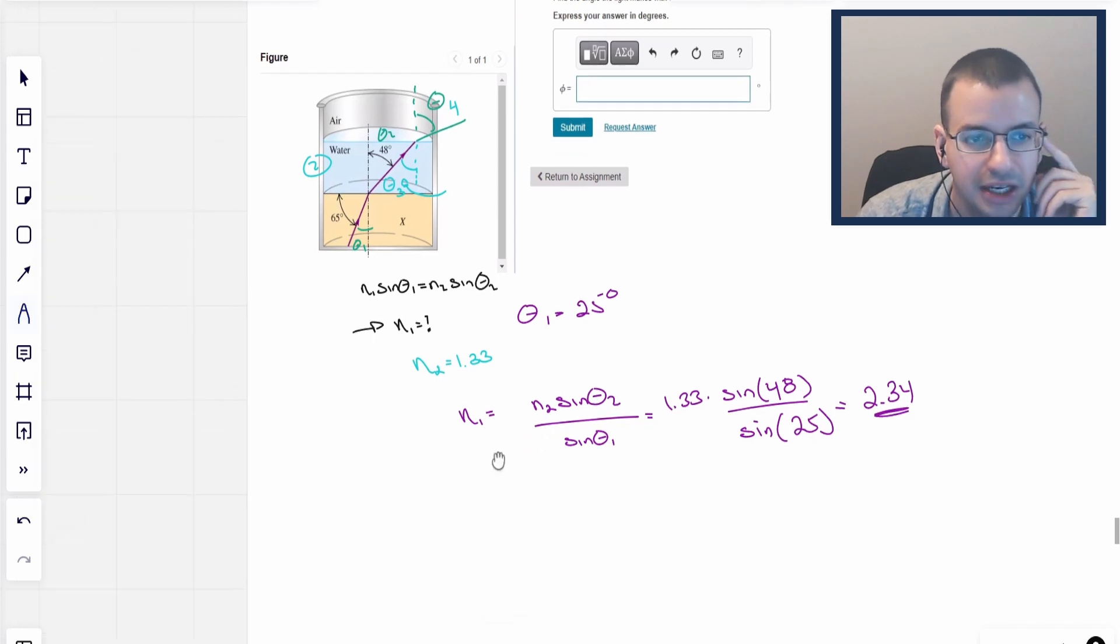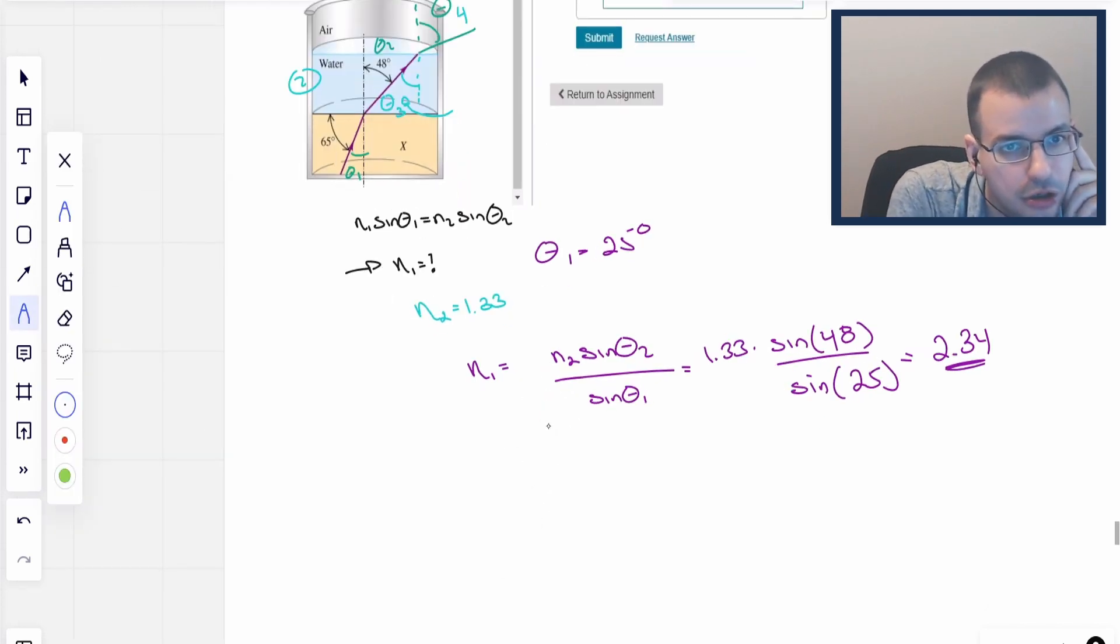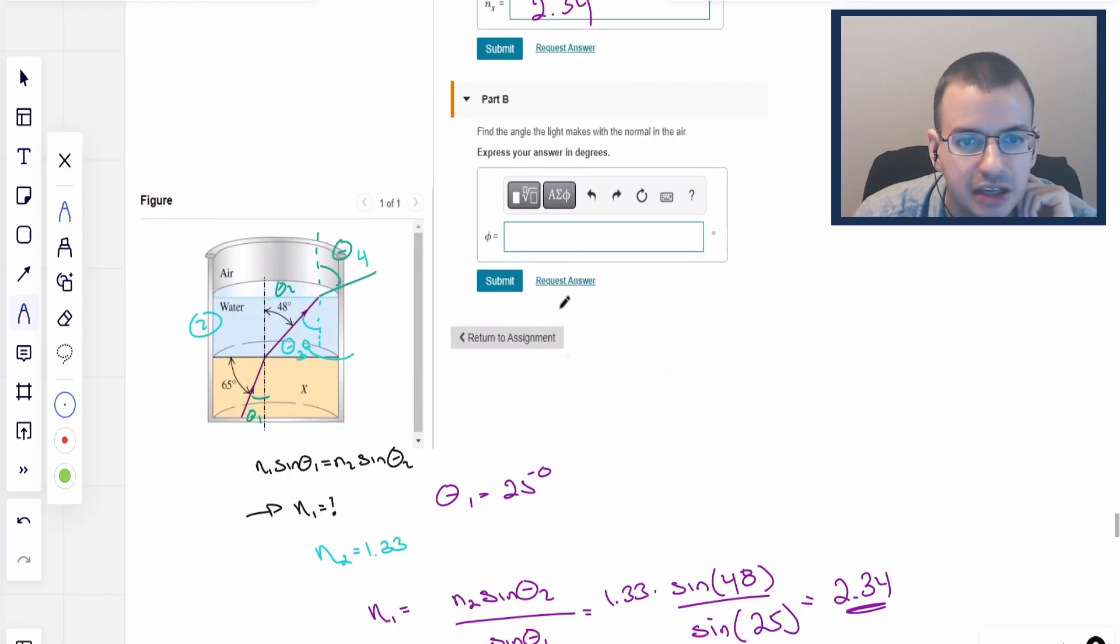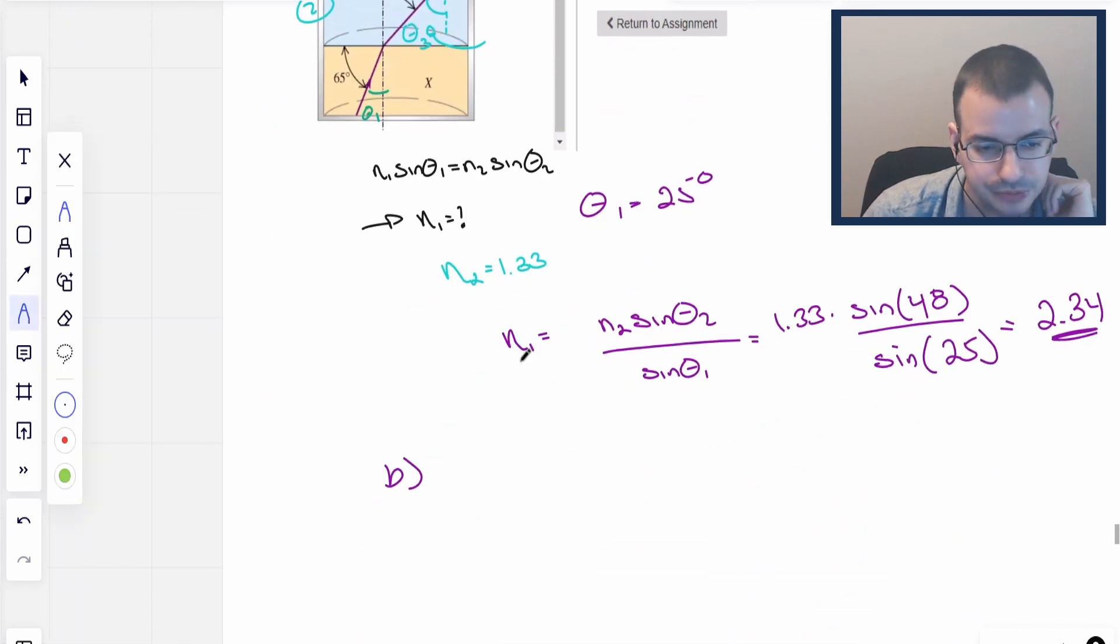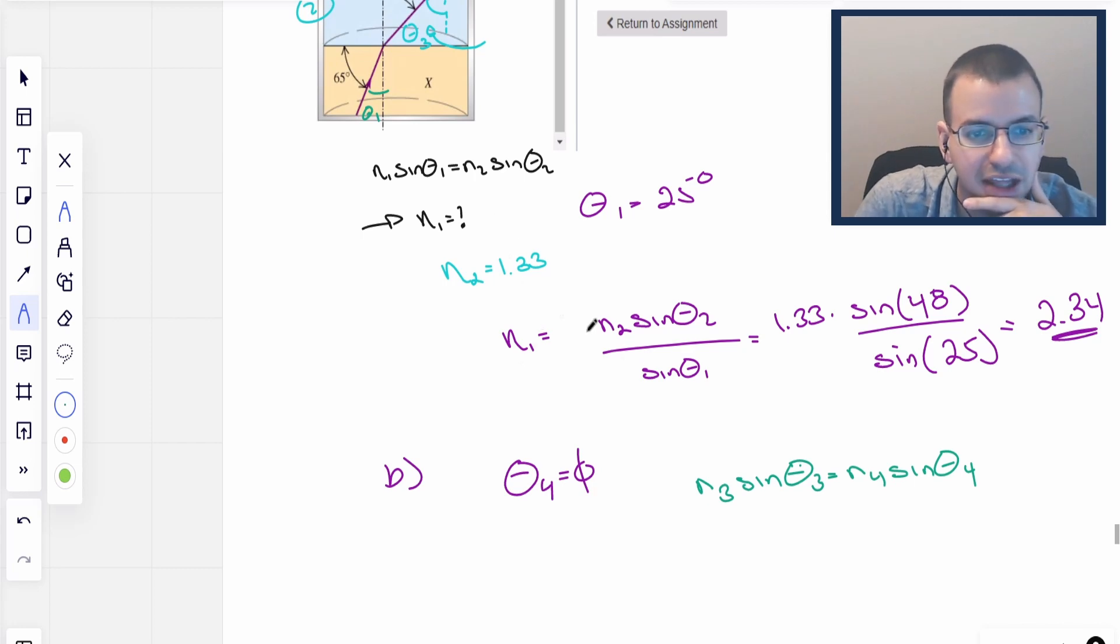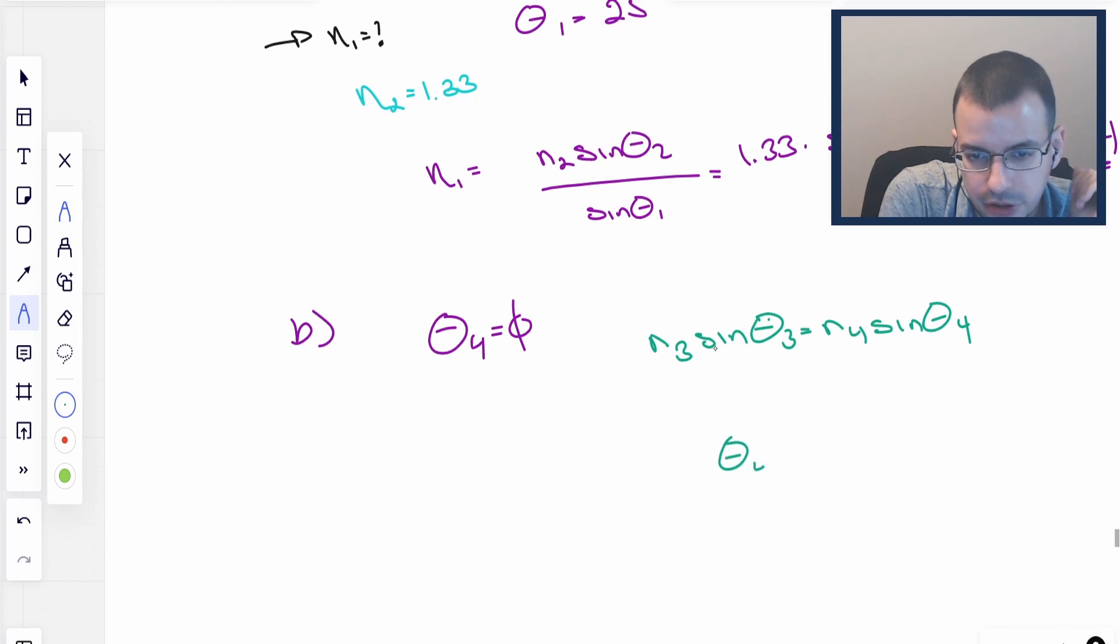Then the next problem, part B. Find the angle that light makes with the normal in the air. So that's going to be theta 4. I'm going to call this theta 4. Actually I'm going to change things around a little bit. I'm going to call this theta 3, and up here theta 4. Theta 4 equals phi, just to say that that's what they're looking for. N3 sine of theta 3 equals N4 sine of theta 4. We want to find theta 4. So theta 4, which we know is phi, is going to equal arc sine of N3 sine of theta 3 all over N4.